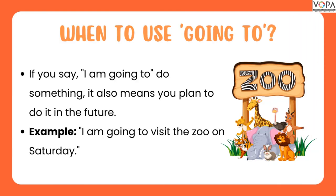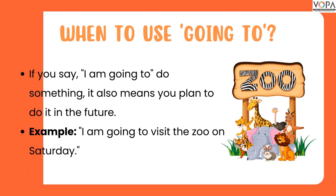When to use 'going to': If you say, 'I am going to do something,' it also means you plan to do it in the future. For example: I am going to visit the zoo on Saturday.